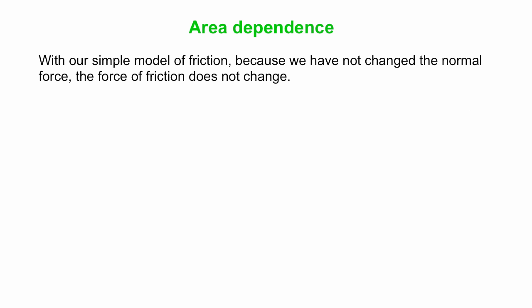Well, in our simple model, FS max is mu S times the normal force. We haven't changed the normal force. We haven't changed the type of surfaces in contact, so the mu hasn't changed. So the force of friction doesn't change.